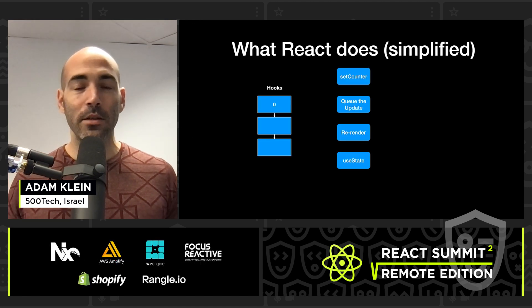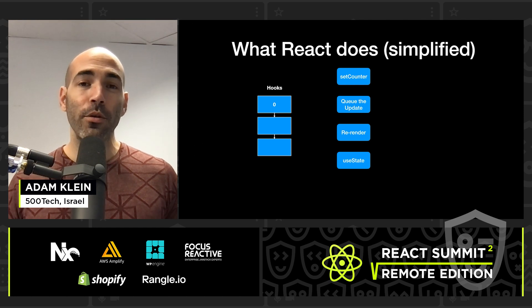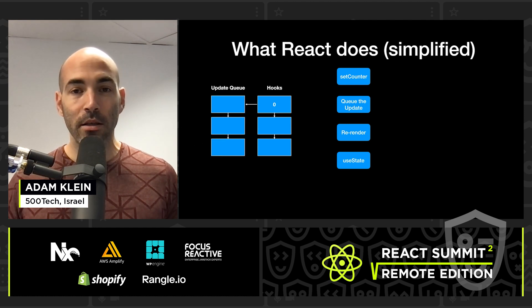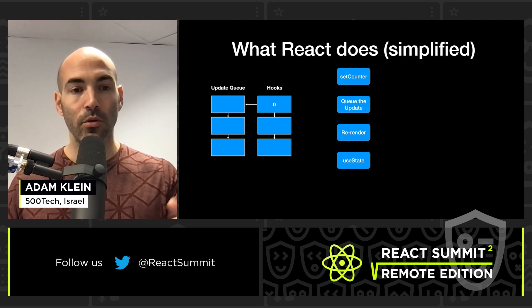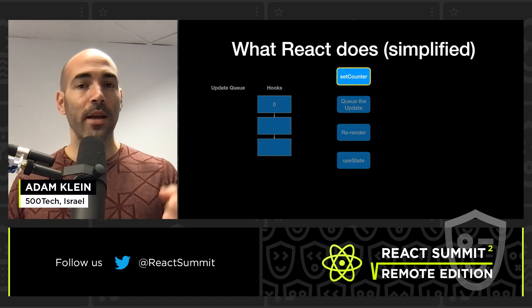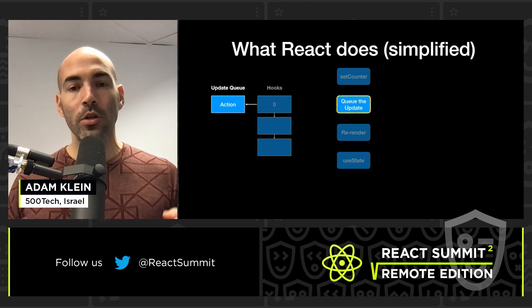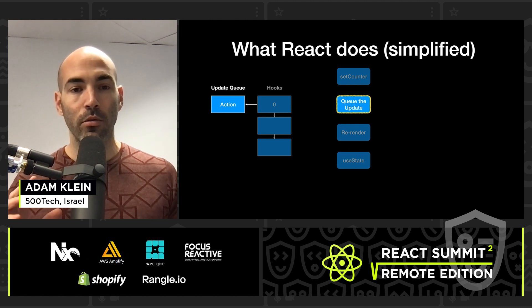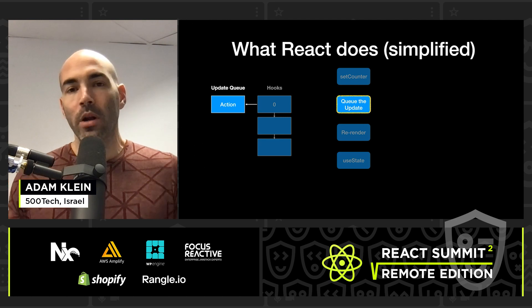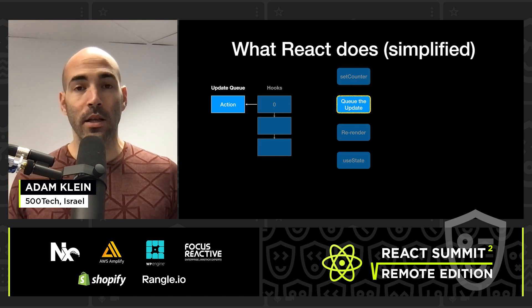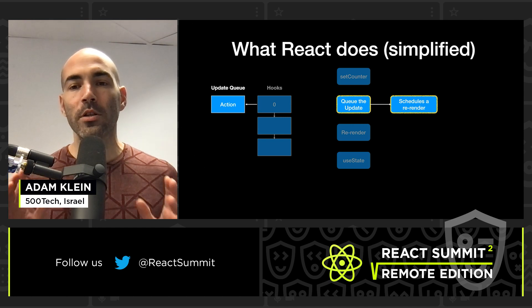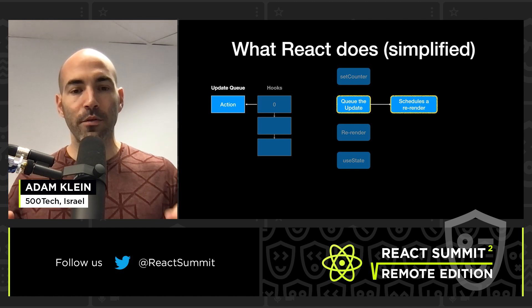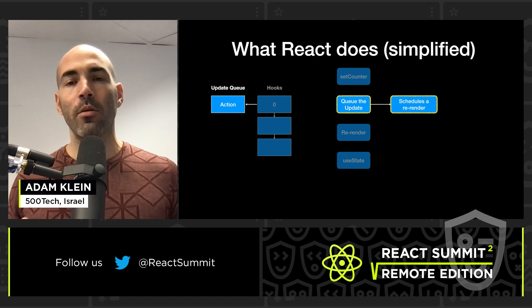Let's see what React really does. This is a simplified version. Every hook has its own update queue where React keeps all of the pending actions for that hook. So when we call setCounter, React just adds the update to the queue — it adds an action. The action is whatever we passed into setState, which could be either a function, a value, or in the case of reducers, the dispatched action.